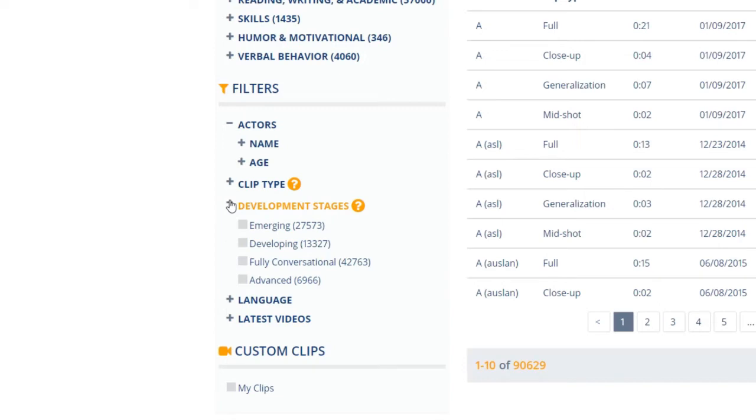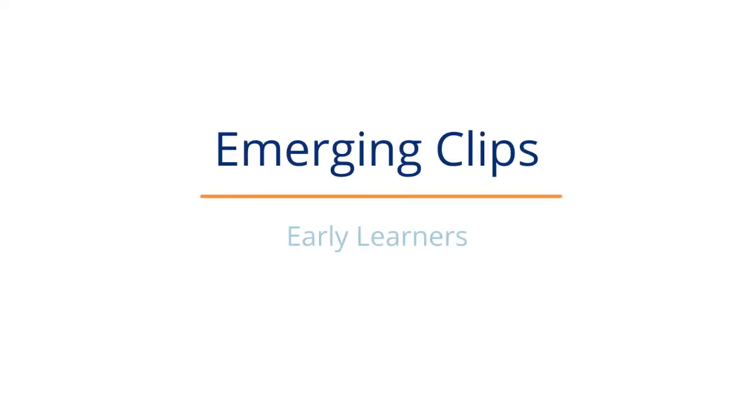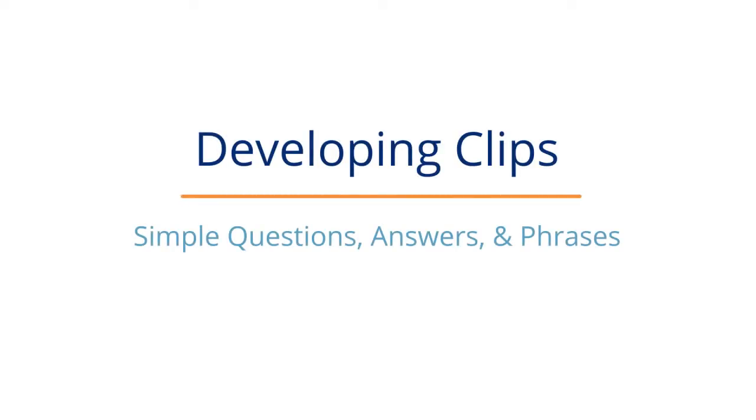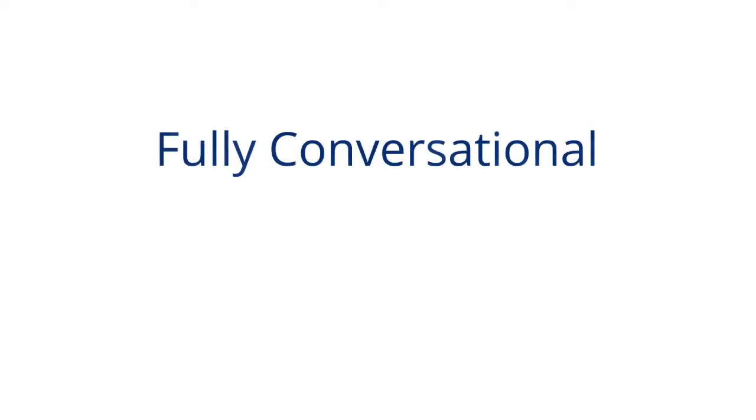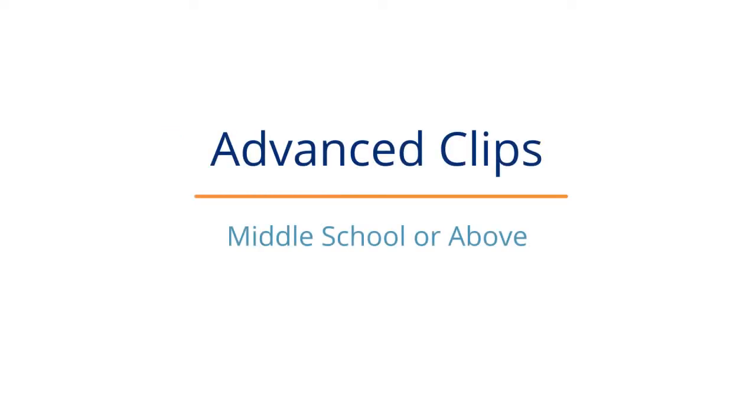Development stages break our library into four groups. Emerging clips are for the earliest learners. Developing clips are for children learning simple questions, answers, and phrases. Fully conversational clips are for sentences and larger interaction. And advanced clips are for middle school or above content and vocabulary.